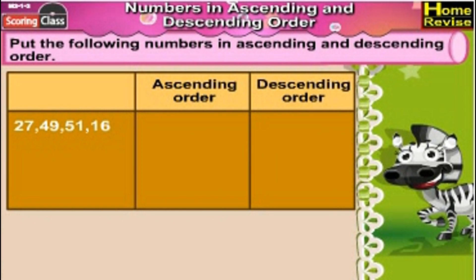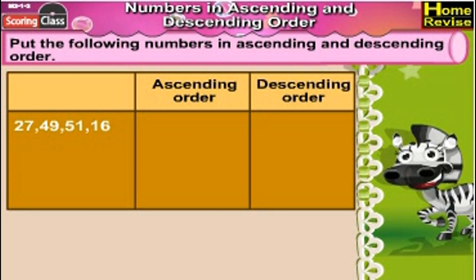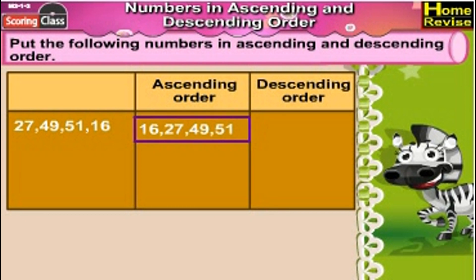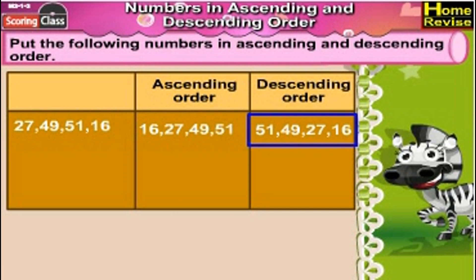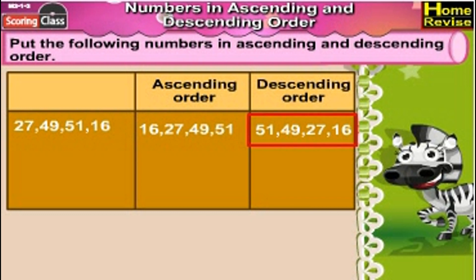Next set: 27, 49, 51, 16. The ascending order would be 16, 27, 49, 51. The descending order would be 51, 49, 27, 16.